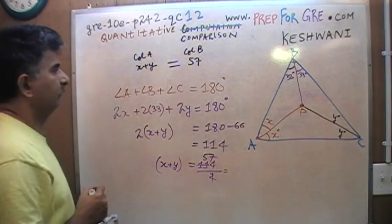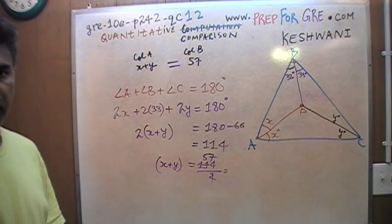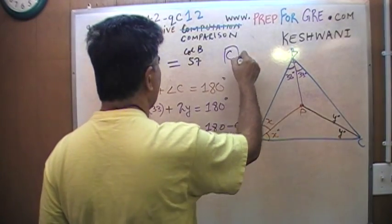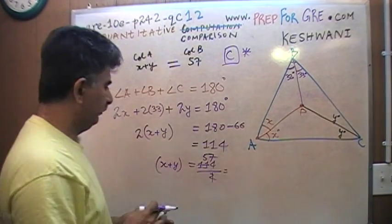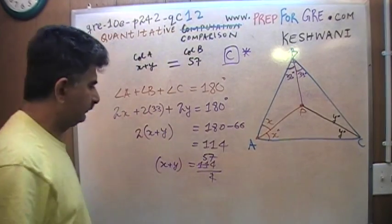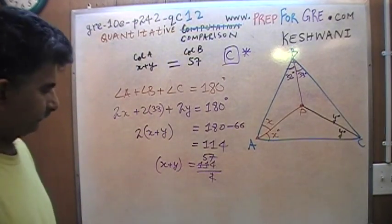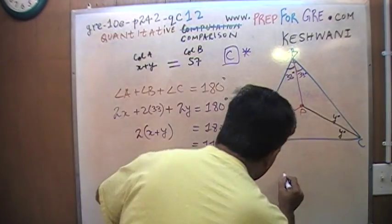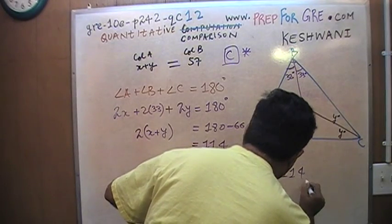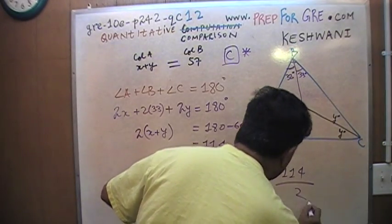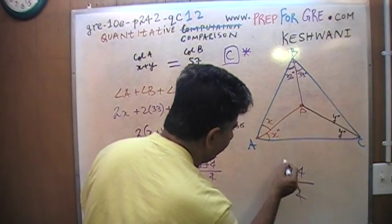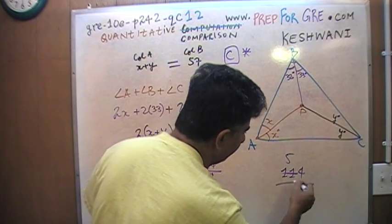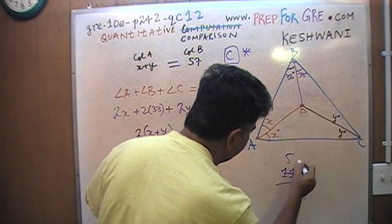These two sides are equal — both columns are equal — and therefore the answer is C. That's all, you're done. To recap: 114 over 2 — 11 goes in 5 times with remainder 1, carry the 1 to get 14, and 14 divided by 2 is 7 — so X plus Y equals 57.